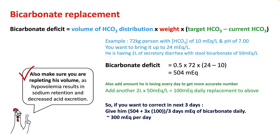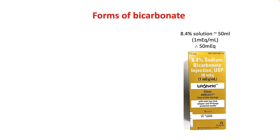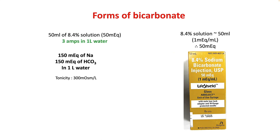Always make sure that you reassess volume status, as hypovolemia will result in sodium retention and decreased acid excretion, and you may not be able to achieve your target. Bicarb comes in 8.4% solution at a concentration of 1 mEq per mL. Each vial has around 50 mL, so 1 vial of sodium bicarb has 50 mEq of bicarb.